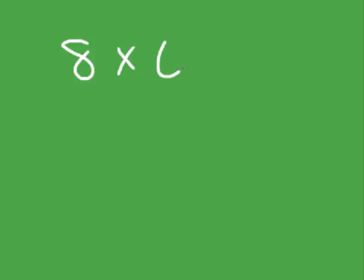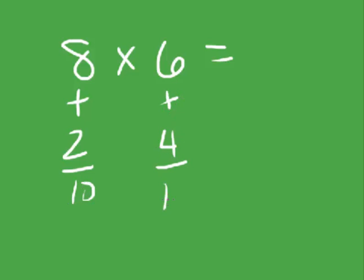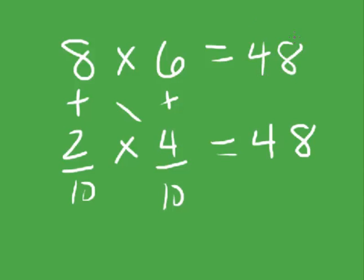8 times 6 equals what? 8 plus 2 equals 10. 6 plus 4 equals 10. I can do 8 minus 4 equals 4. And then I have 2 times 4 equals 8. So the answer is 48.